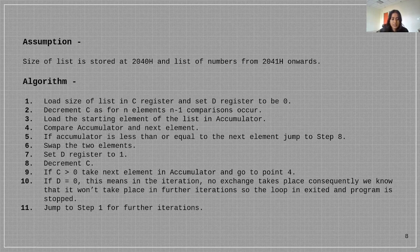If D is equal to 0, this means in the iteration no exchange takes place. Consequently we know that it won't take place in the further iterations as well. So the loop is exited and the program is stopped. Then we jump to step 1 for further iterations and repeat all of these steps again.